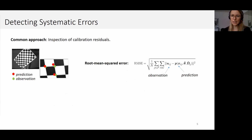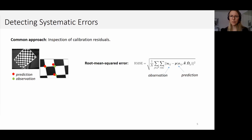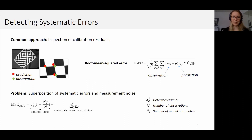The most common approach to detect systematic errors is to look at the residuals of the calibration — the difference between the predicted and observed coordinates on the calibration dataset. We can look at individual residuals or the RMSE. But there's an important limitation: even if we had chosen the perfect camera model with no systematic errors at all, the residuals will not be zero, because corner detection is generally not perfect. Given only the residuals, it's quite hard to tell whether they are due to detector noise alone or could be reduced by choosing a better camera model.